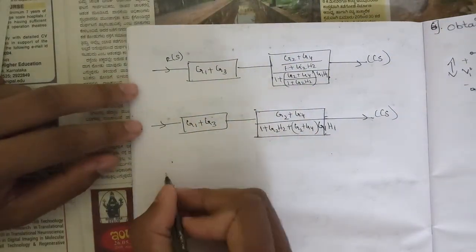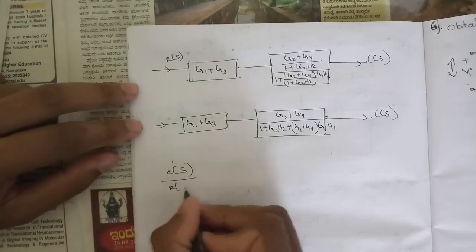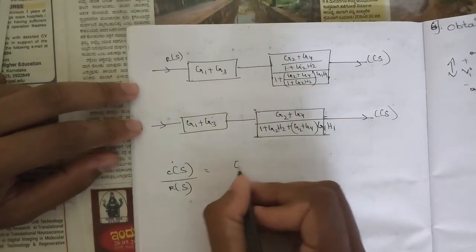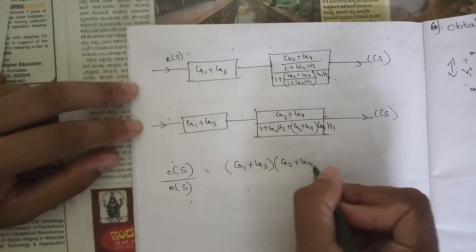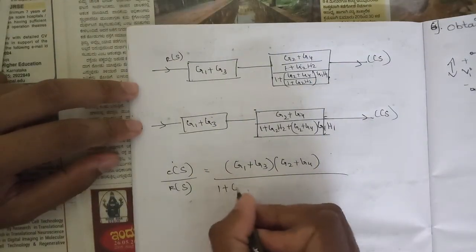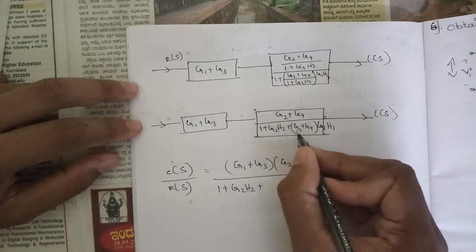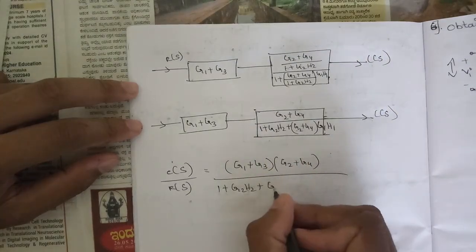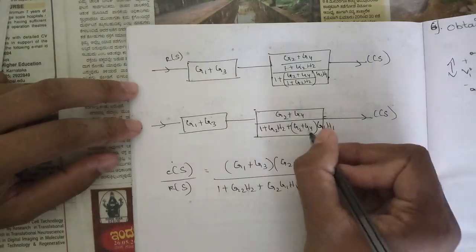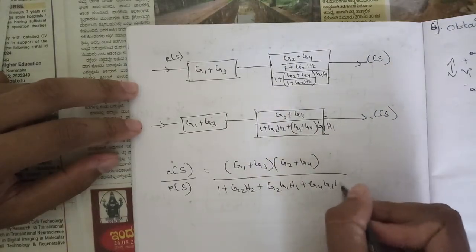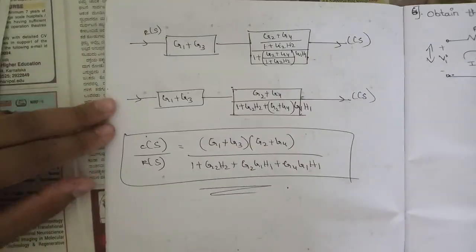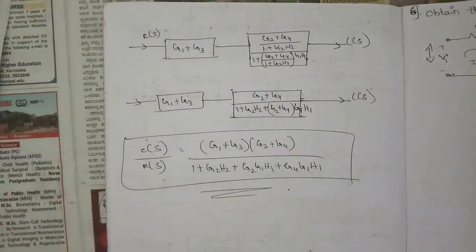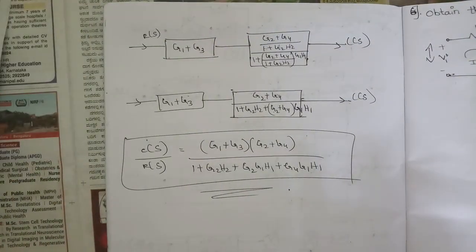These two are in series, so multiply them. The final transfer function C(s)/R(s) equals (G1 + G3)·(G2 + G4) all divided by [1 + G2·H2 + G2·G1·H1 + G4·G1·H1]. This is the final transfer function for this block diagram. Hope you understood this session. Please like, share, and subscribe — thank you.